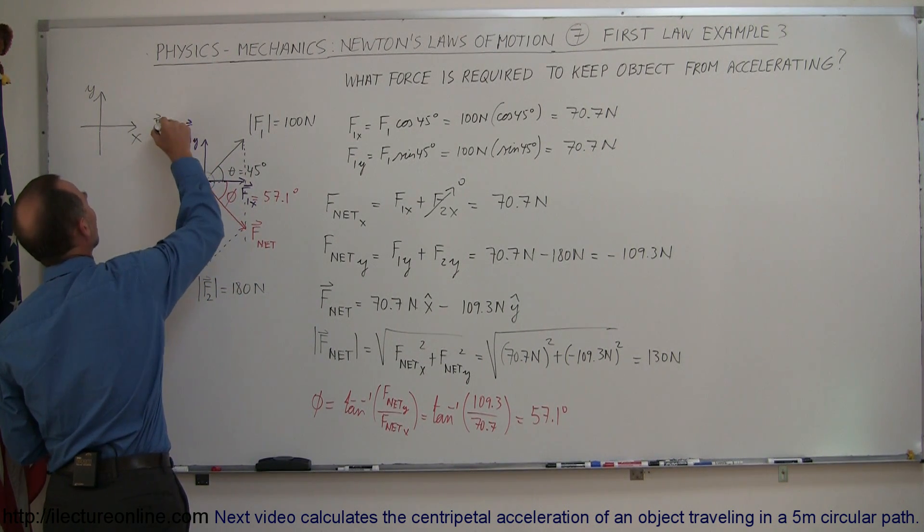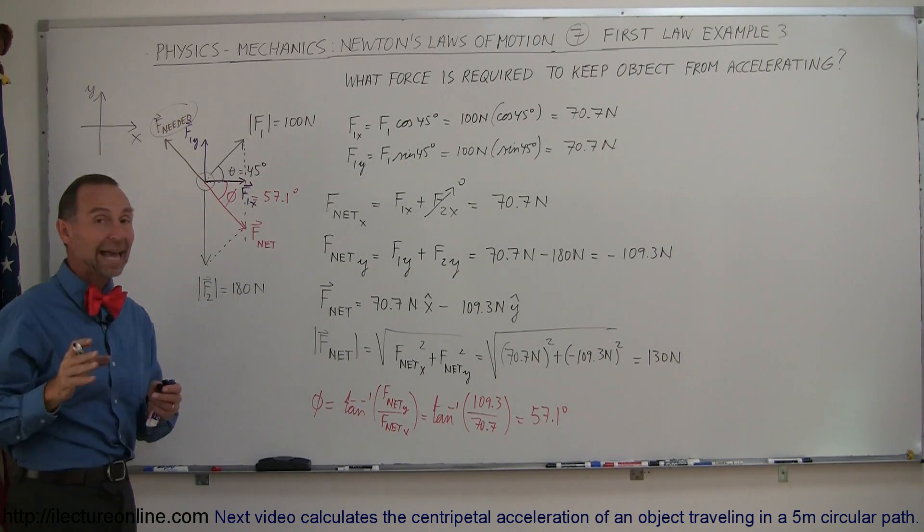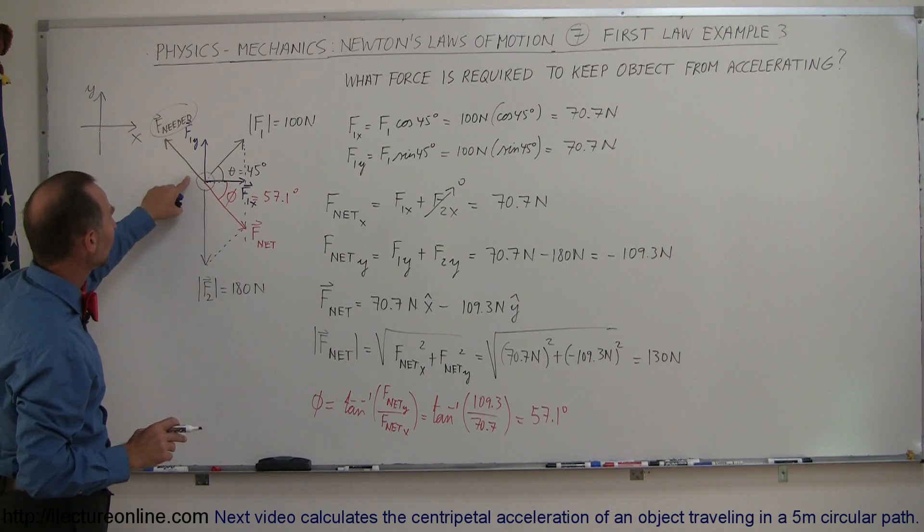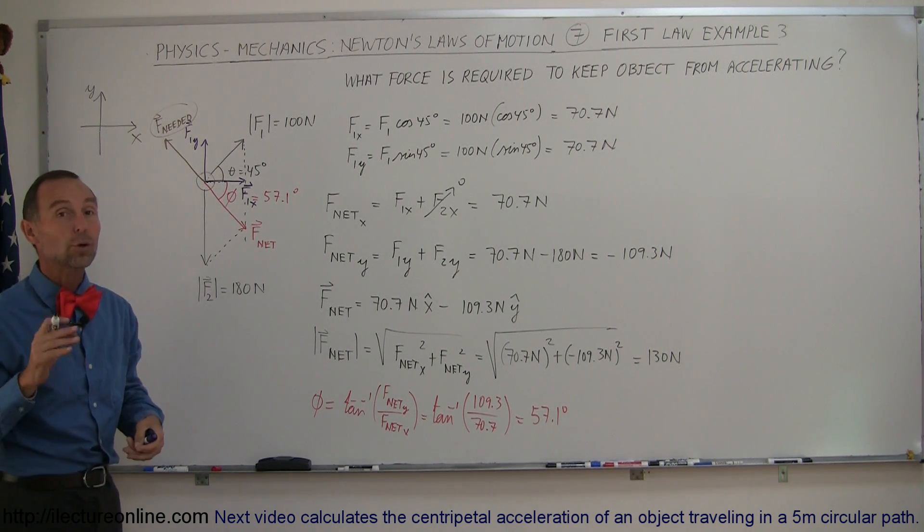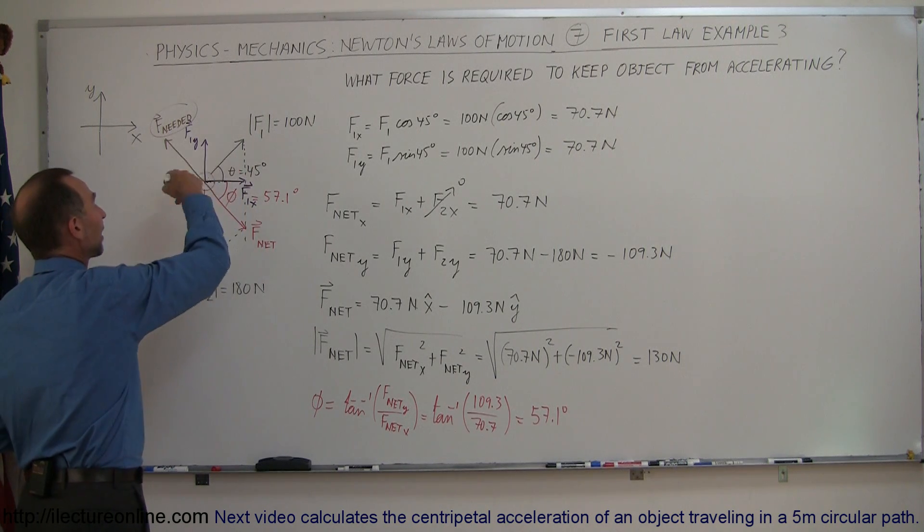So this is the F needed to cancel out the net force on the object. If I add a third force that is equally magnitude and opposite direction to this one, then I would have no acceleration.